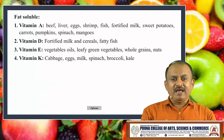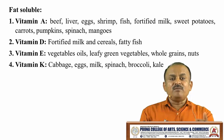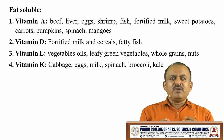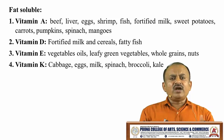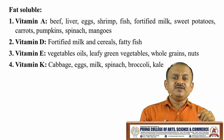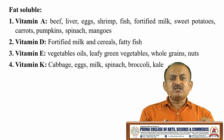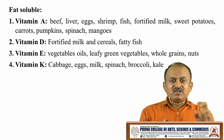The fat soluble vitamins — vitamin A can be obtained from beef liver, eggs, shrimps, fish, fortified milk, sweet potatoes, carrots, pumpkins, spinach and mangoes. Many people nowadays are facing a deficiency of vitamin D because those working in offices with air conditioning are not exposing themselves to sunlight. The sources of vitamin D include fortified milk and cereals, and fatty fish.